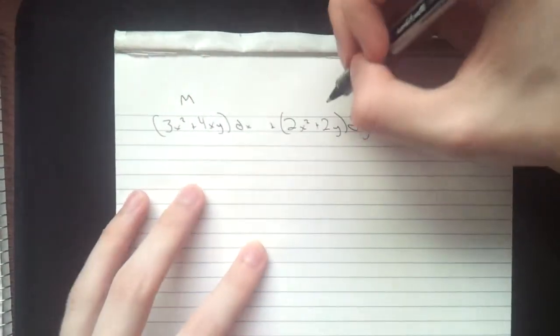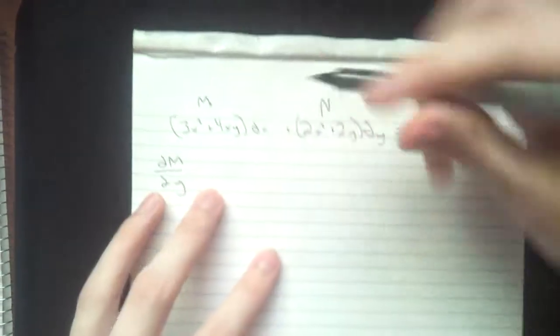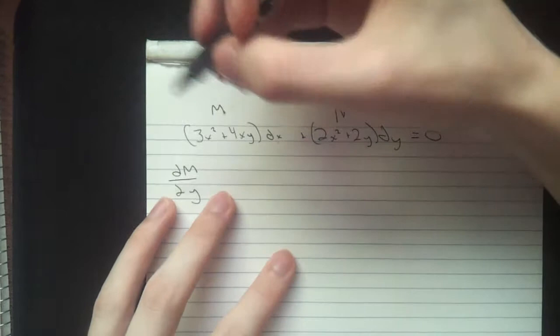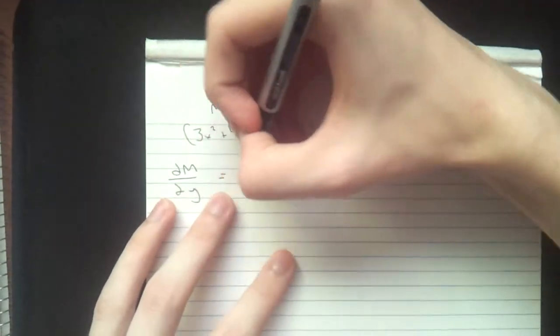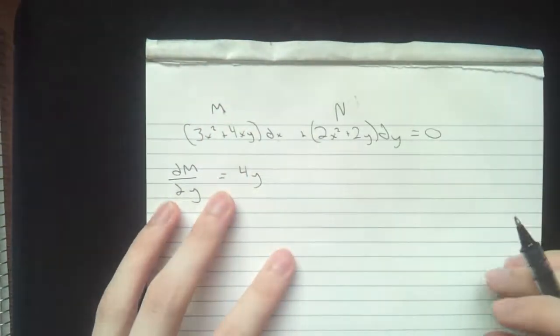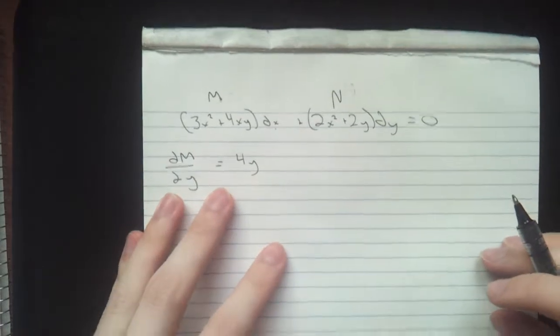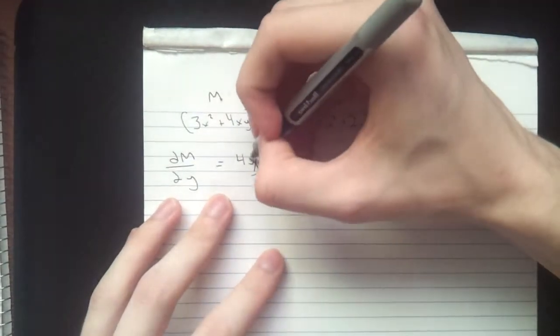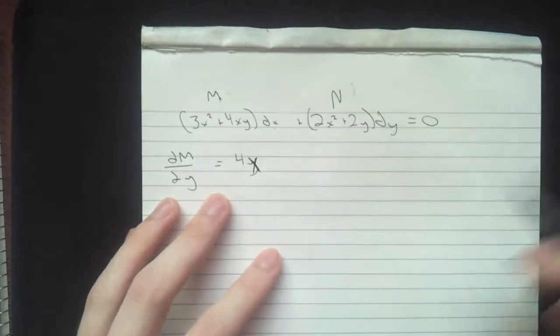This, of course, is our M. This is N. So we're going to take ∂M/∂y, because that's the opposite of what's here. And you end up with 4x. That's 4x.